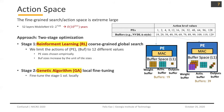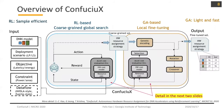After the first-stage coarse-grained global search, we hand it over to the second stage, using a genetic algorithm to do local fine-tuning. It will fine-tune the first-stage solution locally. So the overview of the Confucius algorithm is: stage one is the RL algorithm for coarse-grained global search, and stage two is the GA-based algorithm for local fine-tuning.